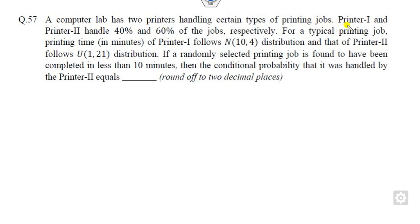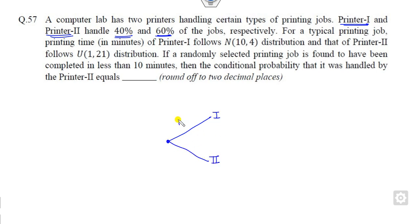Reading the first line: there are two printers, and the probability of respective jobs are 0.40 and 0.60. Whenever Bayes' theorem is involved, you start with these two values. This is Printer 1 with probability 0.40, and Printer 2 with probability 0.60. Always remember the sum of these probabilities must equal 1.